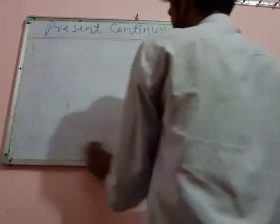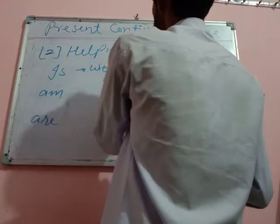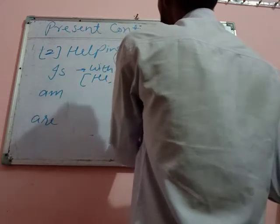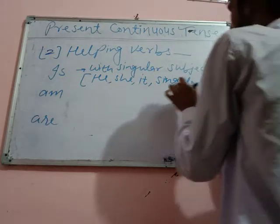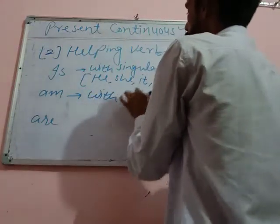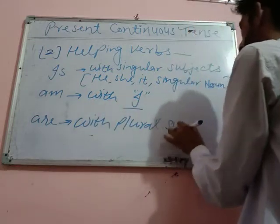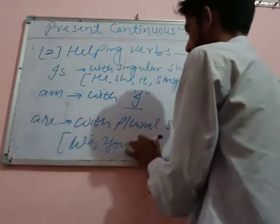So the first thing was time adverbs. The next thing is helping verbs and main verbs. The three helping verbs used in present continuous tense are IS, AM, and ARE. IS is used with singular subjects — he, she, it, and any singular noun which denotes only a single person, place, or thing. AM is used with only I. And ARE is used with plural subjects — we, you, they, and plural nouns.